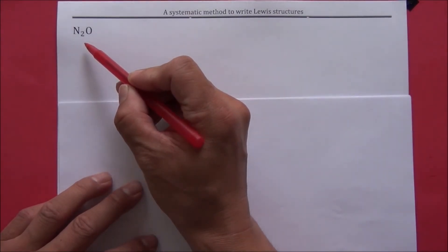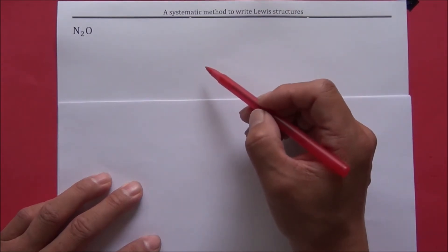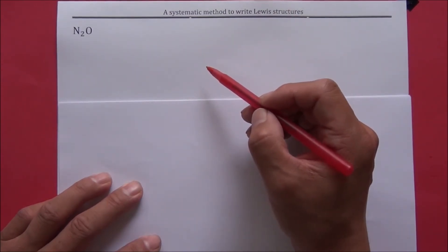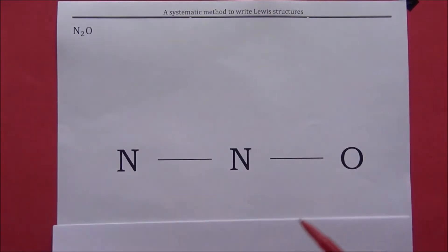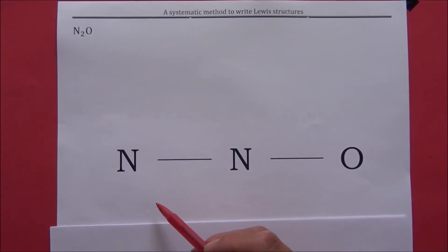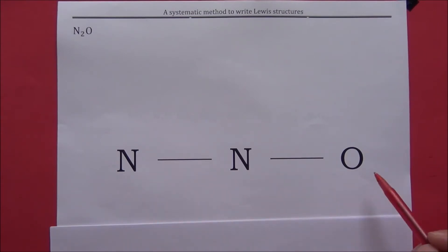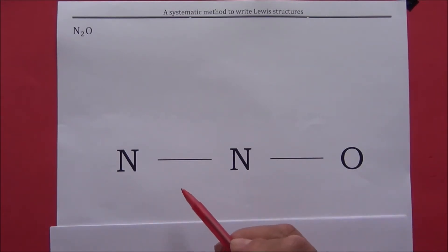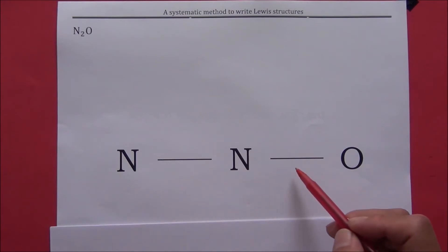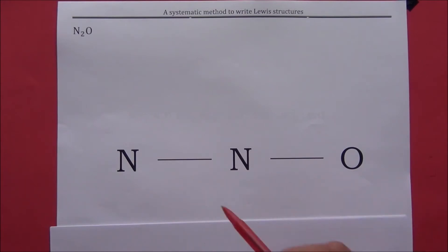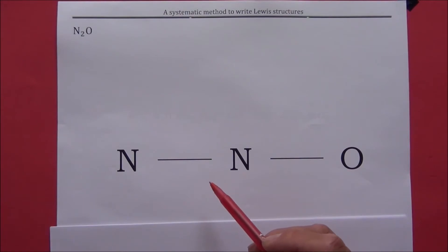N2O is also called laughing gas. Before you start to write your Lewis structure, your instructor should give you a skeletal structure. This is the skeletal structure of N2O. A skeletal structure tells you the connections between different atoms. An individual line in the skeletal structure may not represent a single bond. This is different than a Lewis structure.